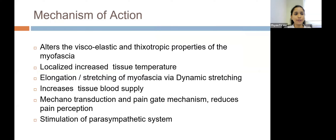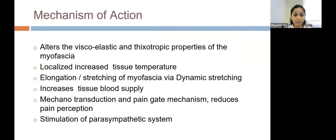Now we will see how foam rolling works on our soft tissue. Our body is composed of the myofascia. Myofascia has a viscoelastic property — both viscous and elastic properties — to bring about mobility. It also has a thixotropic property, meaning there is a gel-like composition of the myofascia which provides adequate gliding between the superficial and deep fascia, required to bring about controlled movements.